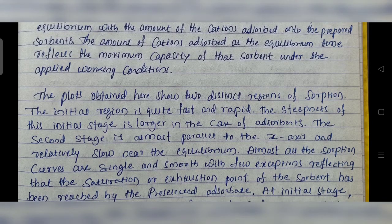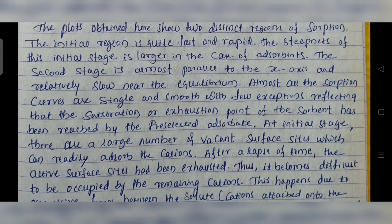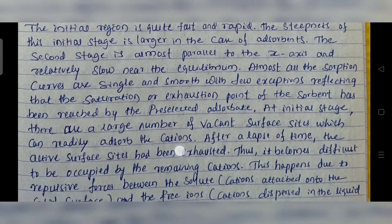The steepness of this initial stage is larger in the case of adsorbents. The second stage is almost parallel to the x-axis and relatively slow near the equilibrium. Almost all the sorbent curves are single and smooth, reflecting that the saturation point of the sorbent has been reached by the pre-selected adsorbent.